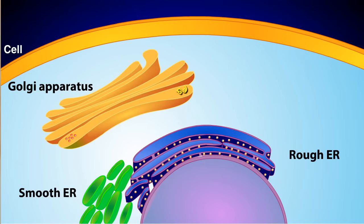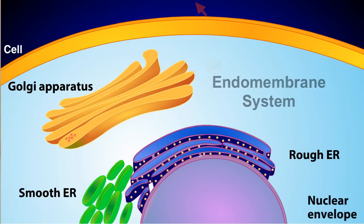Before these products can be exported from the cell, they must first be packaged into a secretory vesicle. This vesicle then merges with the plasma membrane, releasing its contents into the external environment.